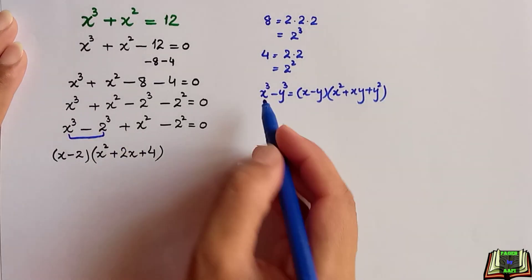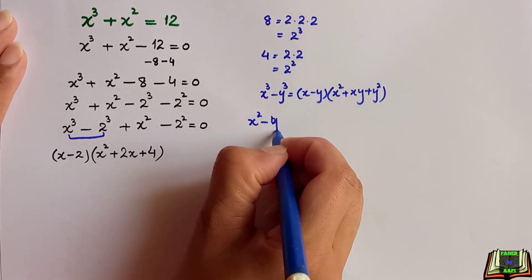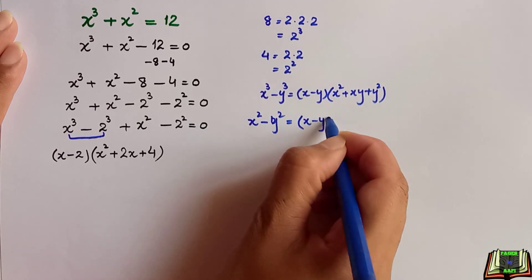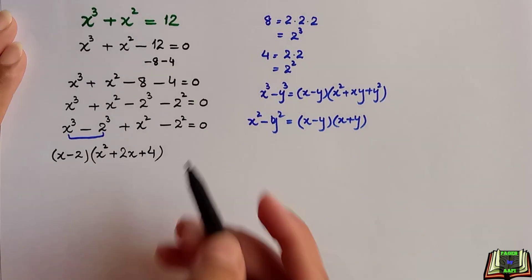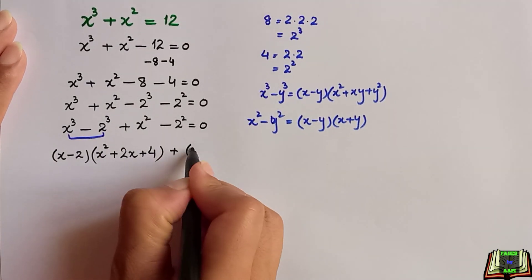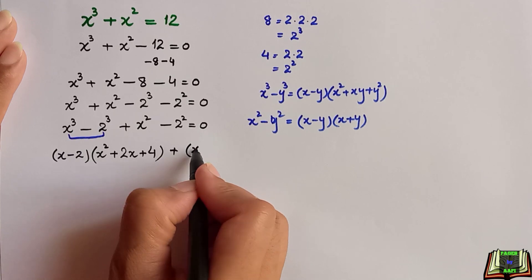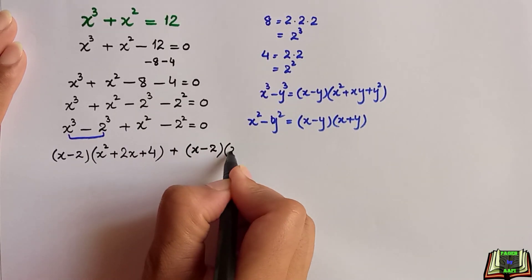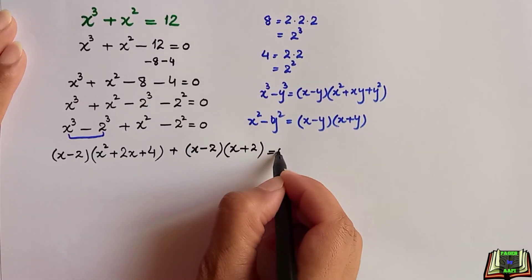Now we will use another formula for x square minus y square. This is equal to x minus y times x plus y. So in this case we have x minus 2 times x plus 2 is equal to 0.